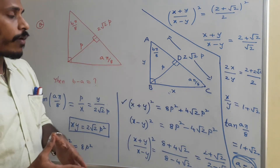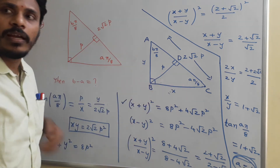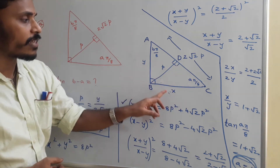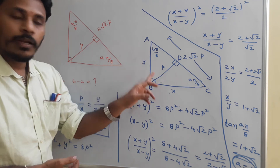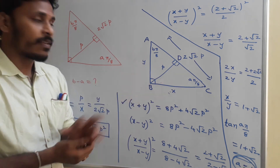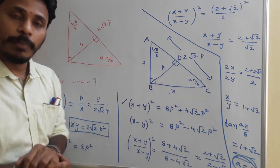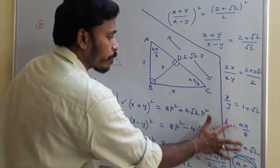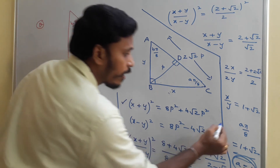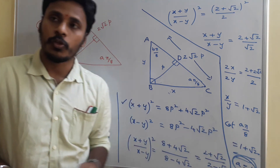What is tan(a·π/8)? Tan of a·π/8 is opposite side over adjacent side — opposite side is y, adjacent side is x, so tan(a·π/8) = y/x. Here we have x/y, which is simply cot(a·π/8). So cot(a·π/8) = 1 + √2.